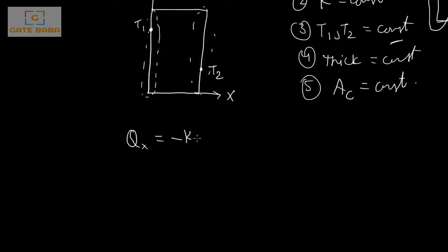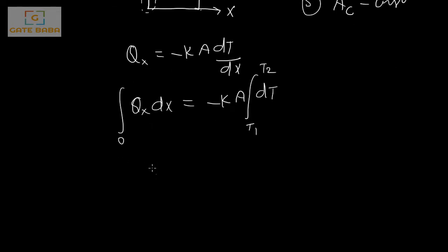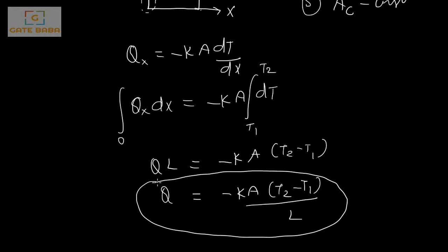From Fourier's law of heat conduction, q at any x is given by minus K·A·(dT/dx). Using the variable separable method: q·dx = −K·A·dT. Since K and A are constants, we integrate T from T1 to T2 and x from 0 to L (the total thickness). This gives q·L = −K·A·(T2 − T1), so the rate of heat transfer is q = −K·A·(T2 − T1)/L.